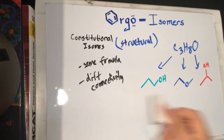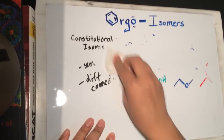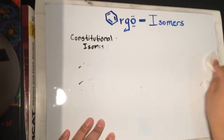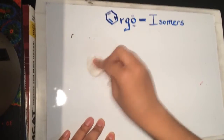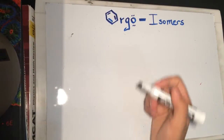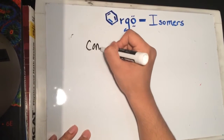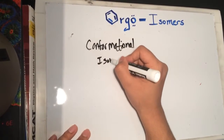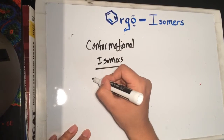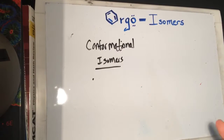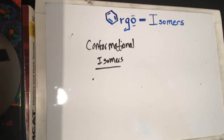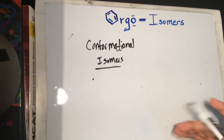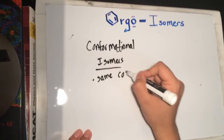The next type is conformational isomers. Structural isomers have different connectivity — same amount of atoms but different connections. Conformational isomers, on the other hand, have the same connectivity.